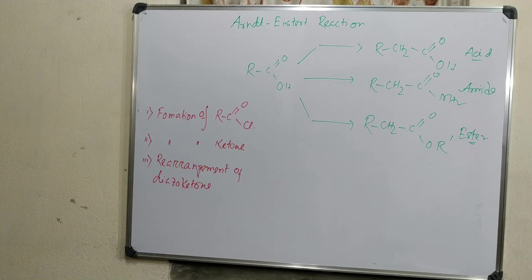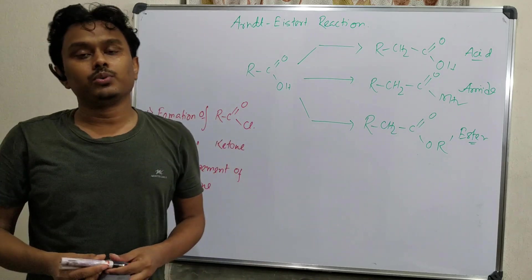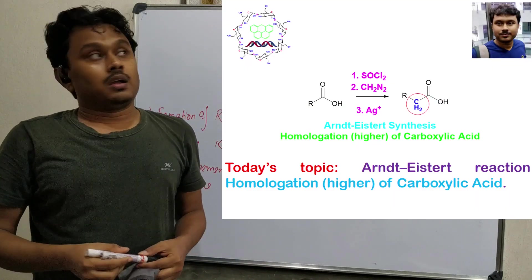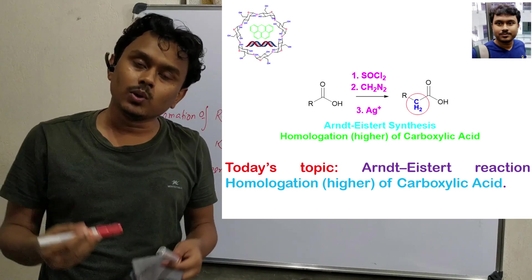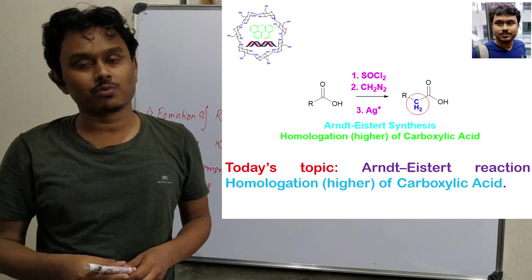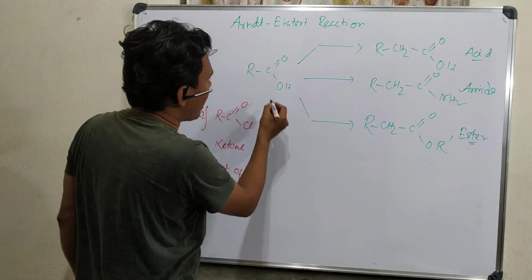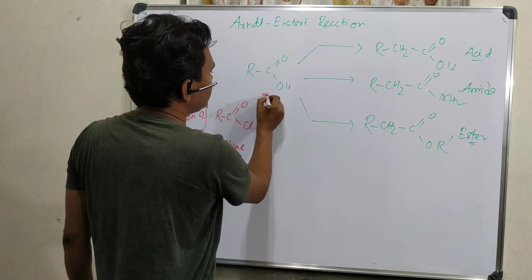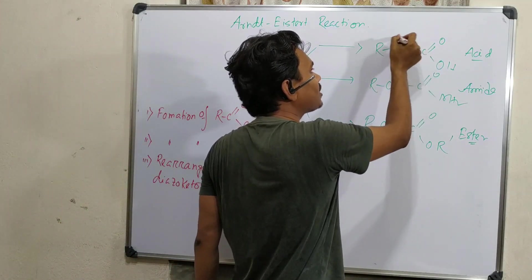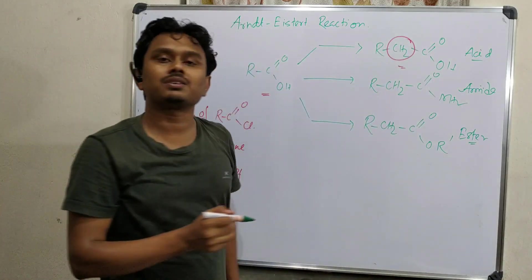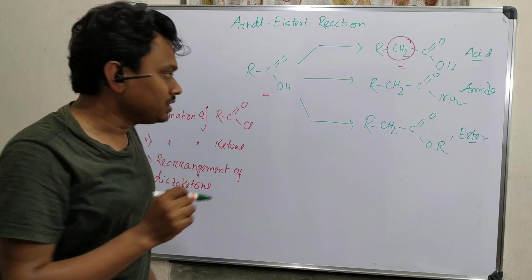Welcome friends, and welcome you all to my channel. In the history of molecules today, I shall explain the Arndt-Eistert reaction. This reaction is a homologation of carboxylic acid. If we consider RCOCl, from here we will prepare RCH2COOH, meaning one methylene group is extra here.